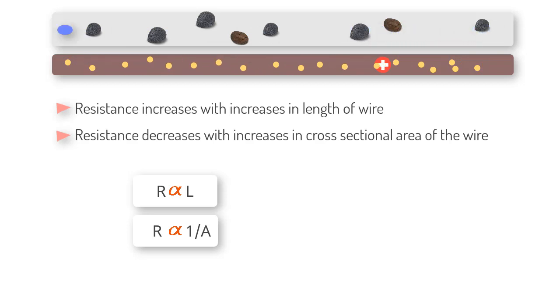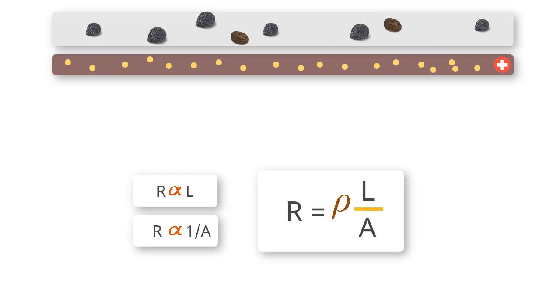Higher the resistivity of a material, more the resistance. And so, finally, we define resistance of a wire as R is equal to rho L by A.